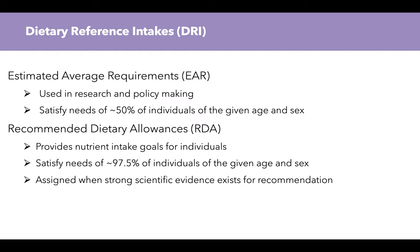The Estimated Average Requirements, EAR, is used in research and policymaking, so we don't really apply this to individuals. This satisfies the need of about 50% of individuals of the given age and sex. For instance, if the EAR for a given nutrient is 800 milligrams and people consume that, it's going to meet the needs of about 50% of the individuals in that given age and sex.